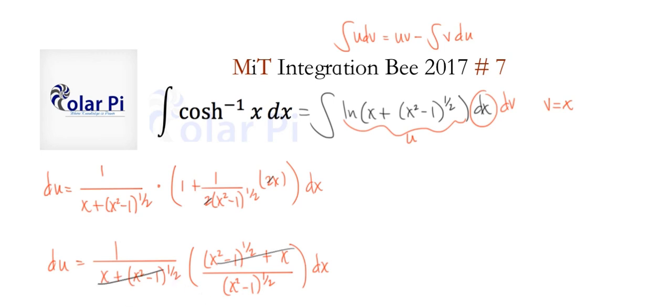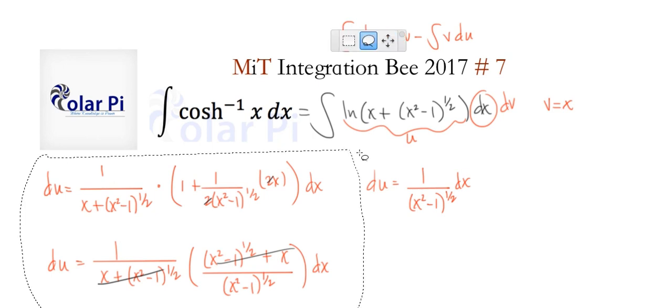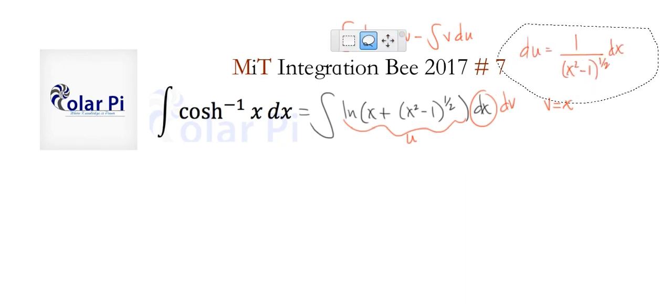So that means du is equal to one over x squared minus one to the positive one half times dx. Finally, that would never be over. Get rid of this and scoot this guy up.